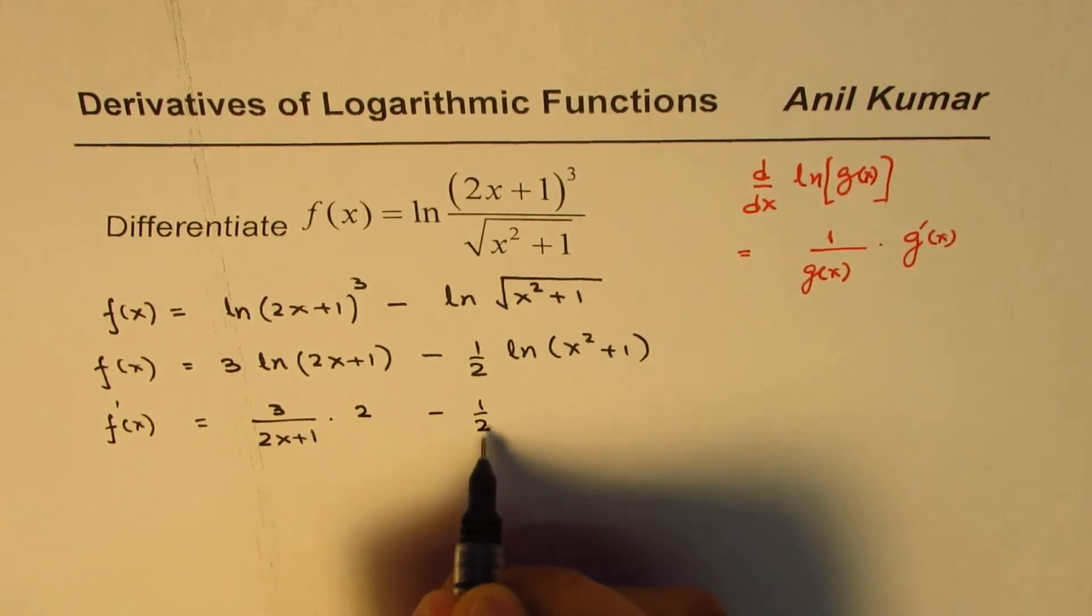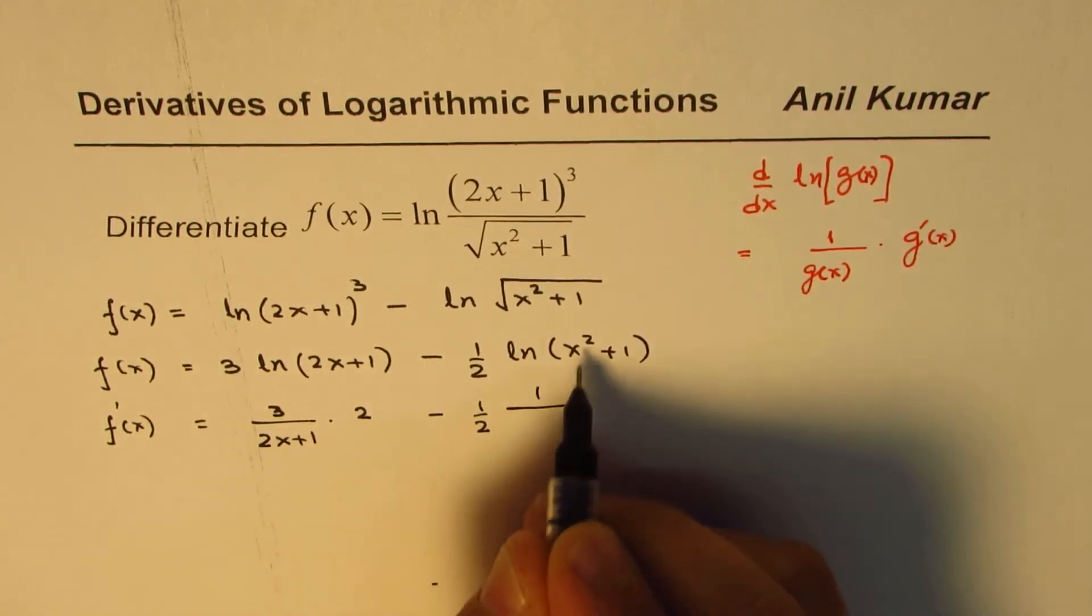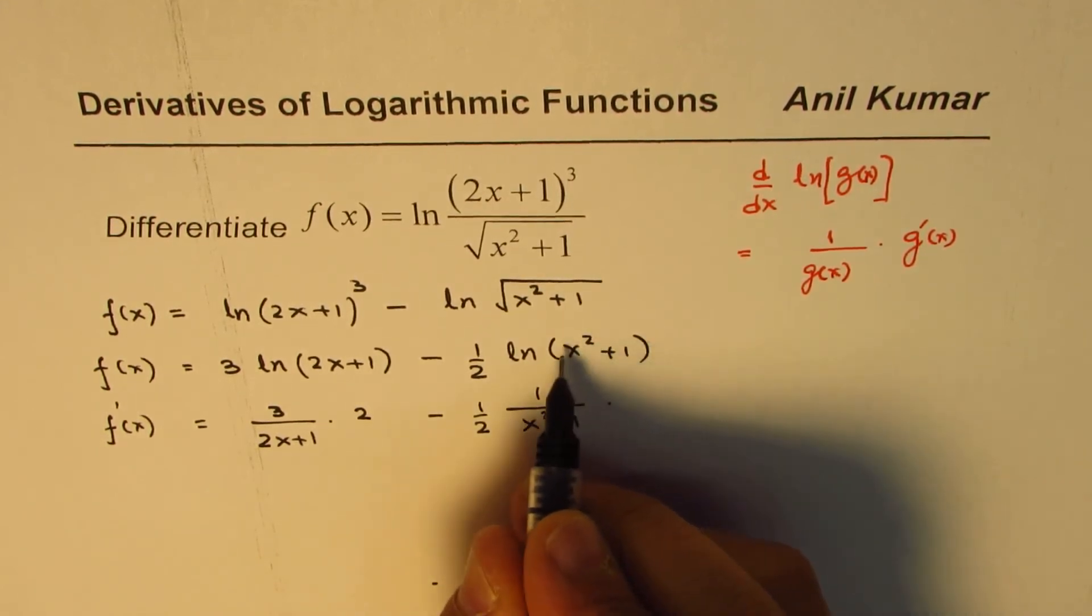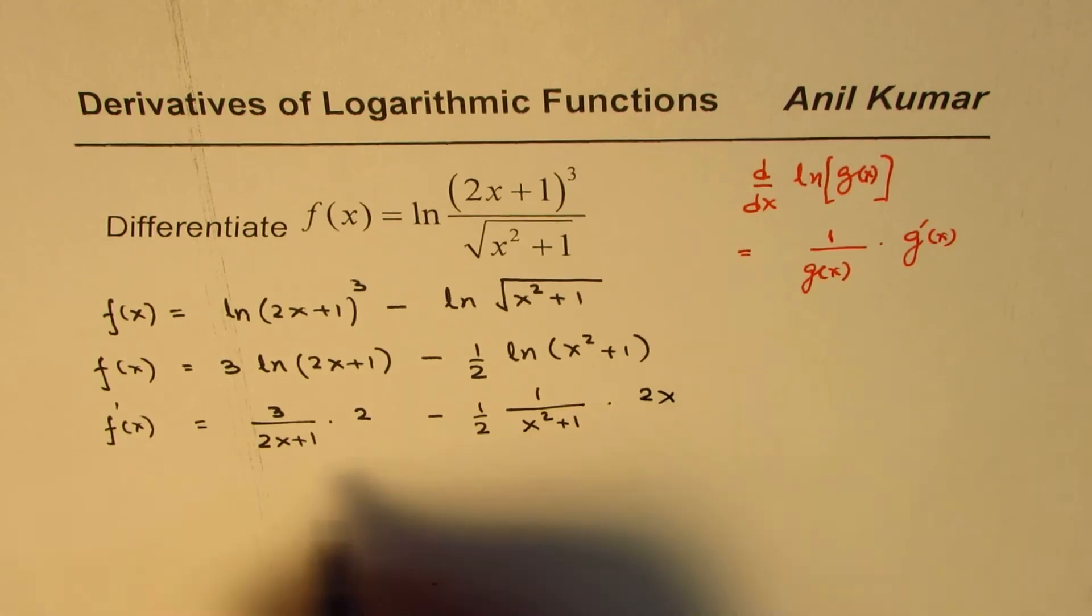...minus 1/2 over (x²+1) times the derivative of the inside function, which is 2x.